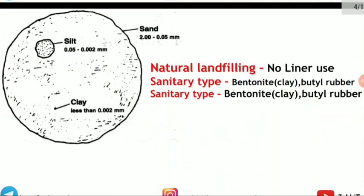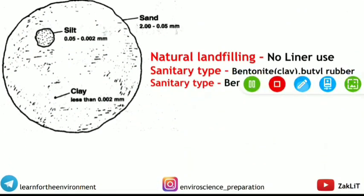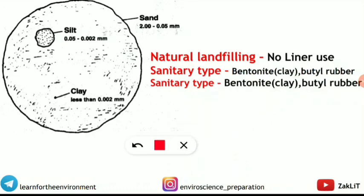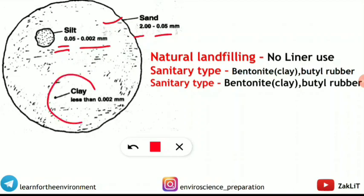This is also a frequently asked question: sand, silt, and clay particle sizes. Sand particle size ranges from 0.05 to 2 mm. Silt ranges from 0.002 to 0.05 mm. Clay is the smallest, with particle size less than 0.002 mm. This was asked in some form — you need to arrange them or identify the largest.